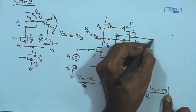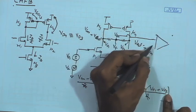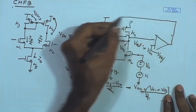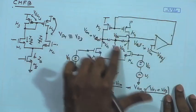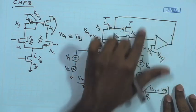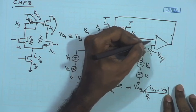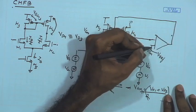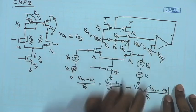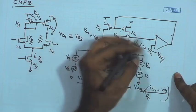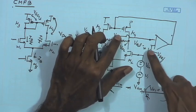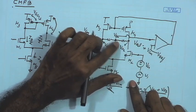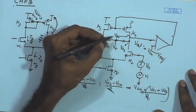We can apply an error amplifier here with a reference voltage V_ref at one terminal, and make its output control the gate of the PMOS transistors. If we ensure negative feedback in this loop, it will force the two input terminals of the error amplifier to be equal, ensuring V_cm equals V_ref. We also need to make sure the polarity is such that an increase in V_cm causes the reverse corrective action through M3 and M4, bringing V_cm back to V_ref.